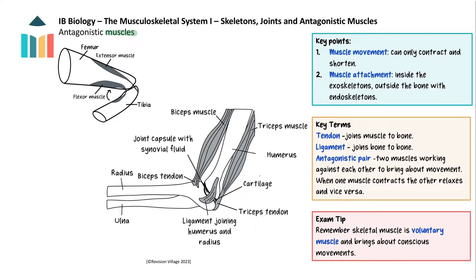When we move our arms and legs we can move them towards and away from ourselves. However, muscles can only contract — they can only shorten and pull, but they cannot actively push or extend on their own. Therefore, to achieve movement, muscles have to work in antagonistic pairs.